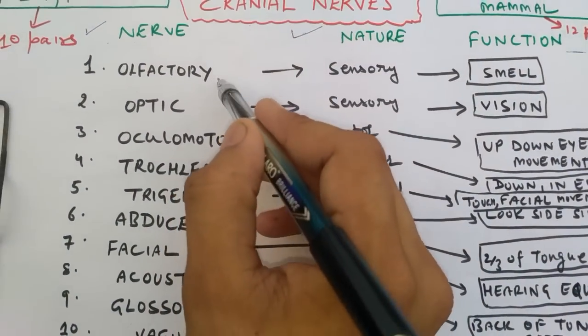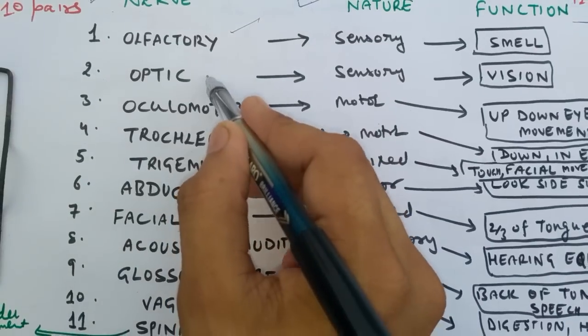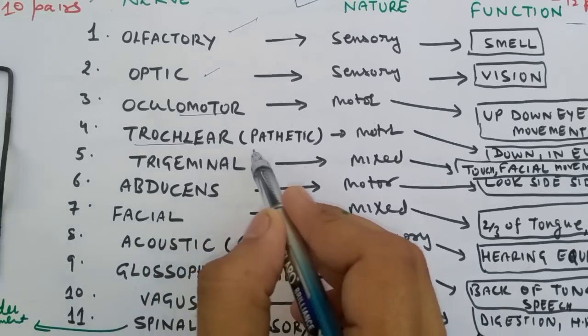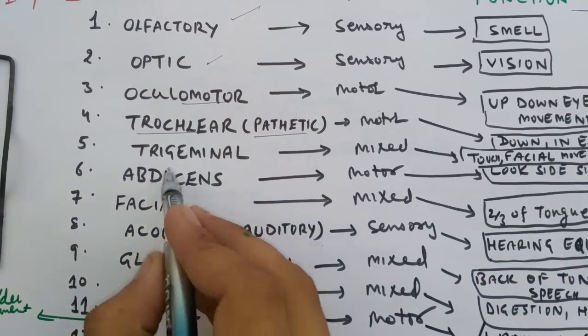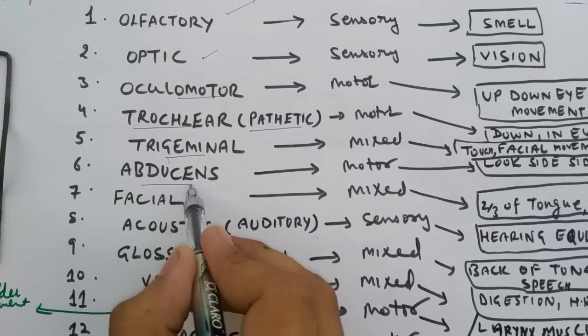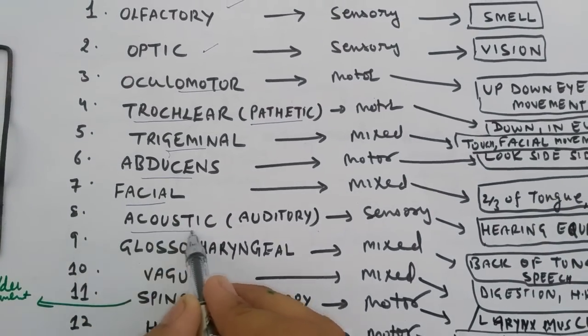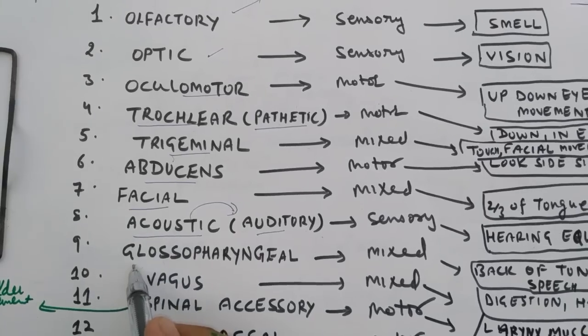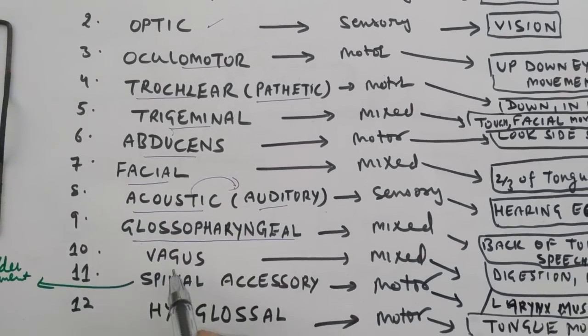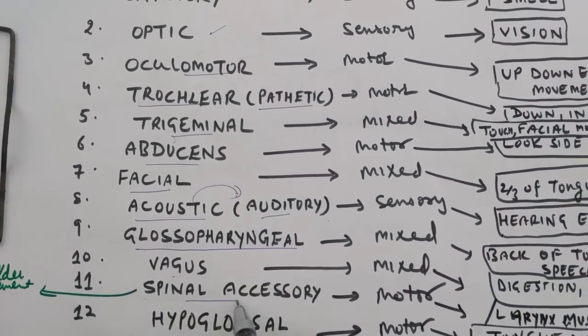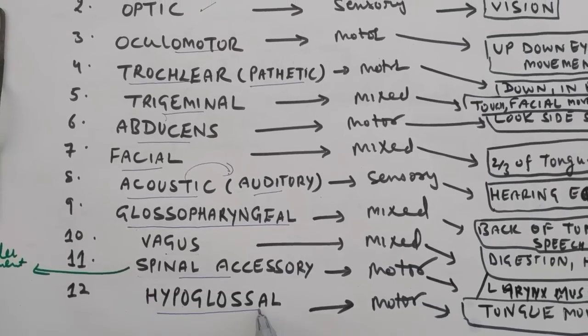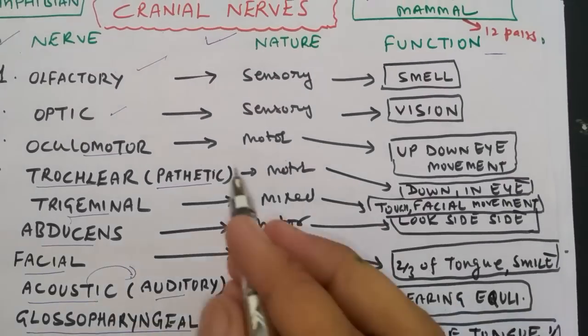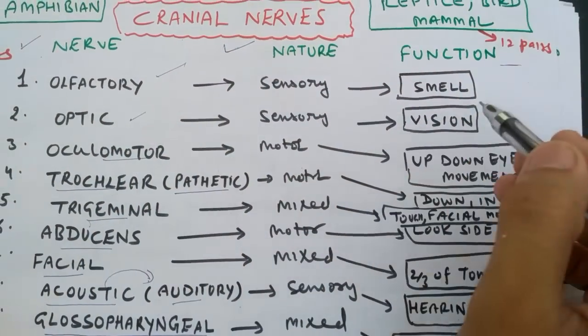First of all, their names: first is the olfactory, second is optic, third oculomotor, fourth trochlear or pathetic, fifth trigeminal, sixth abducens, seventh facial, eighth acoustic or auditory, ninth glossopharyngeal, tenth vagus, eleventh spinal accessory, and the last is the hypoglossal.